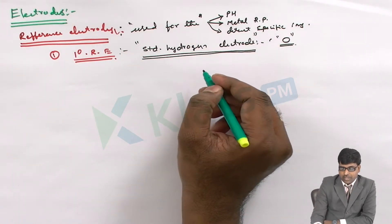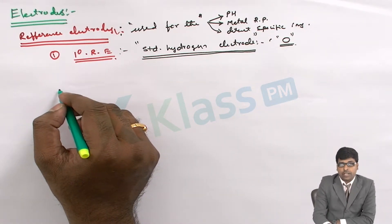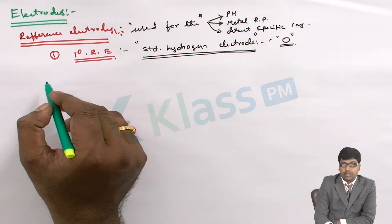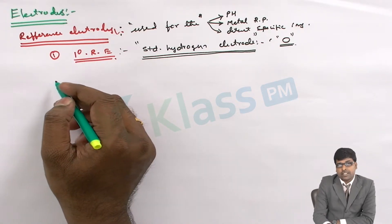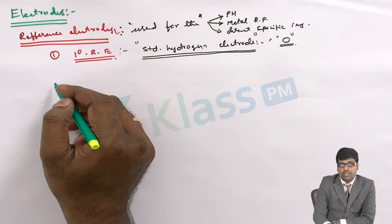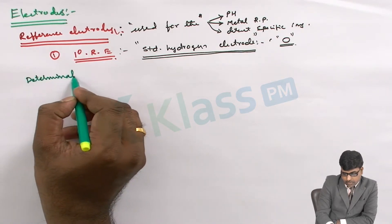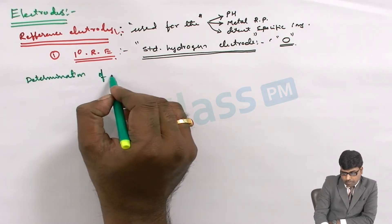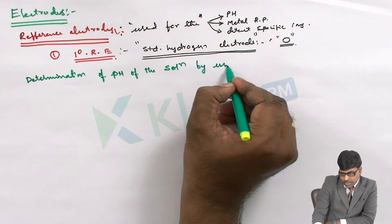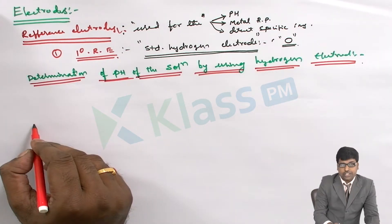So the standard hydrogen electrode — let's see what happens with the standard hydrogen electrode when we connect two hydrogen electrodes, in which one is the standard hydrogen electrode and the other is where the unknown solution is kept. Simply put, this is the determination of pH of the solution by using a hydrogen electrode. Let's see the systematic diagram first.